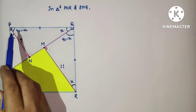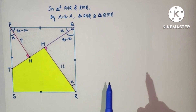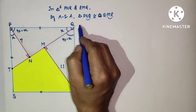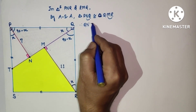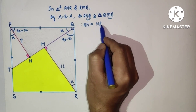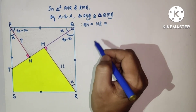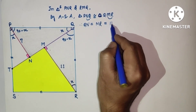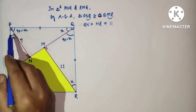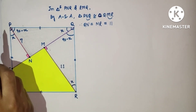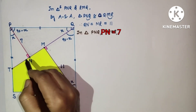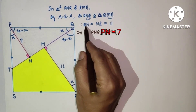The two triangles are congruent by Angle-Side-Angle (ASA). Therefore QN is equal to MR. Since MR equals 11, QN equals 11. Also, PN equals 7 and QN we found to be 11.